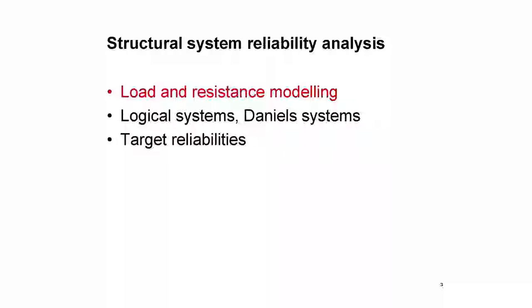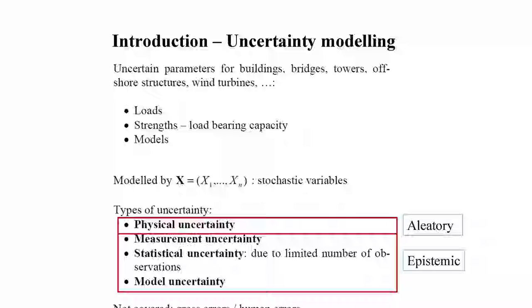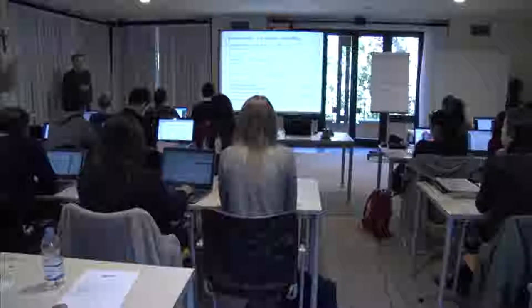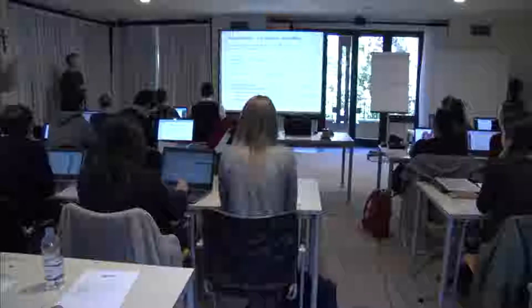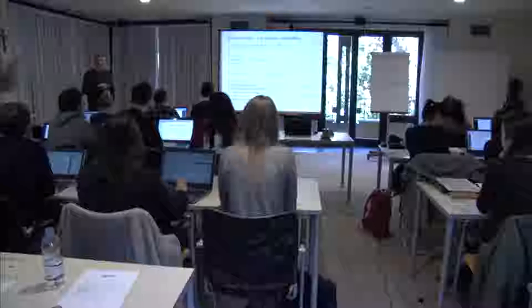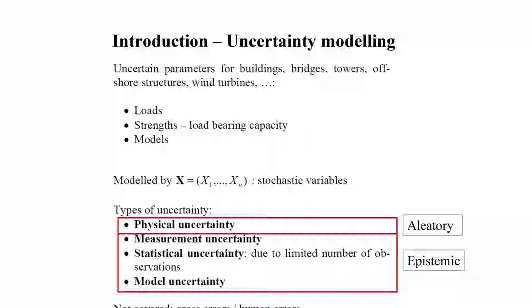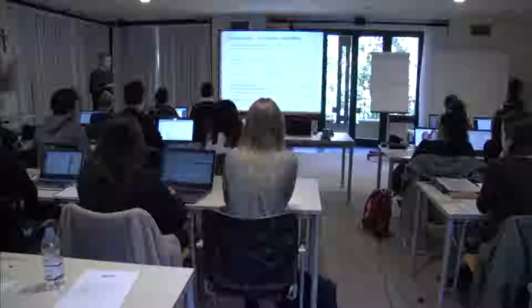The first part is on modeling of uncertainties related to loads and resistance. In general, there are three groups of uncertainties to model: loads — which can be wind loads, snow loads, wave loads, and so on, for different types of structures such as buildings, bridges, and wind turbines — and then strengths, and also model uncertainties, which are very important to model.